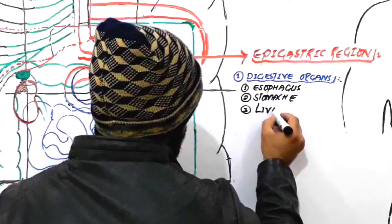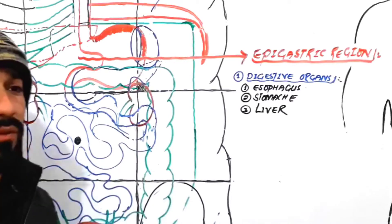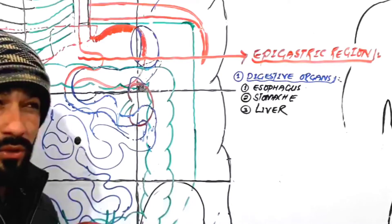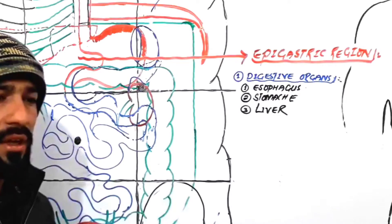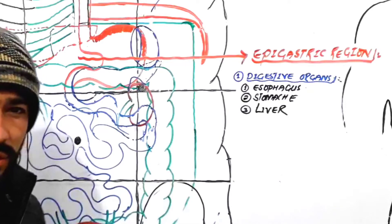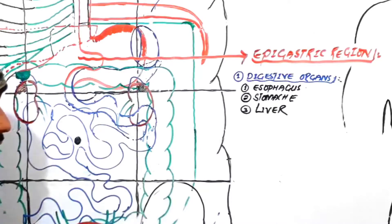Look carefully — some part of the liver is also present in the epigastric region. If you want to examine a patient, you have to be careful about which organ is found in the epigastric region. If a patient has a complaint of epigastric pain, your mind should go to which organ the problem is in. For example, if a patient has GERD — gastroesophageal reflux disease — they will feel pain in the epigastric region. Similarly, if a patient has gastritis, they will feel pain in the epigastric region.